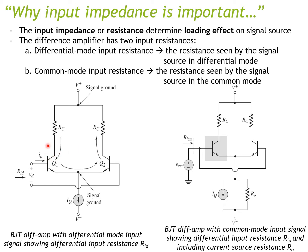When your circuit is in differential mode, you technically calculate the input voltage VD over the input current IB. Likewise, you can calculate the common mode input impedance by dividing VCM by the current coming in.